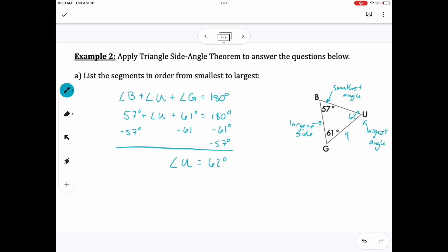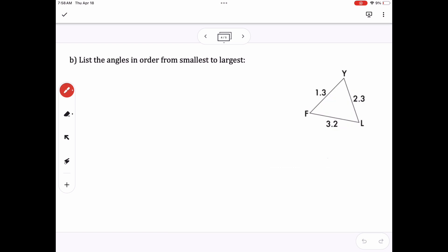Angle B is the smallest, 57, so that means GU, or UG, is the smallest side. And then BU is in between. So then putting that in order, that would be my length from smallest to largest.